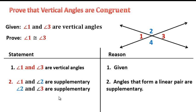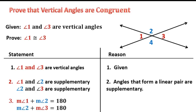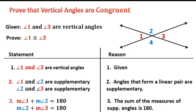Now, in order to use those algebraic properties that we reviewed in the last video, we have to change them so that they look like what we established in algebra — we need numbers, variables, and an equal sign in order to add, subtract, and use those different properties. So now we need to rewrite this and deal with numbers: the measure of angle one plus the measure of angle two equals 180, and the same for angle two and angle three, specifically because now I can apply those algebraic properties.